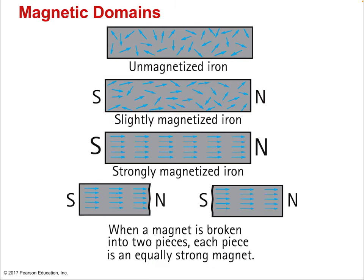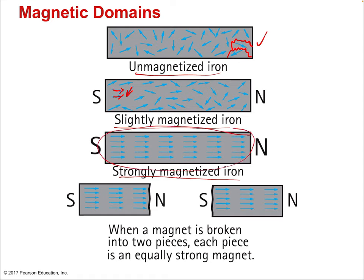When all the magnetic domains line up — say if we forced them all to face the same direction by introducing a strong magnetic field — now you have cooperation between all the domains, and you've got yourself a magnet. That's how you turn a piece of metal into a magnetized piece of metal. The magnet's strength depends on how many domains are aligned and how precisely they're aligned. If they're perfectly aligned, you've got a really strong magnet.